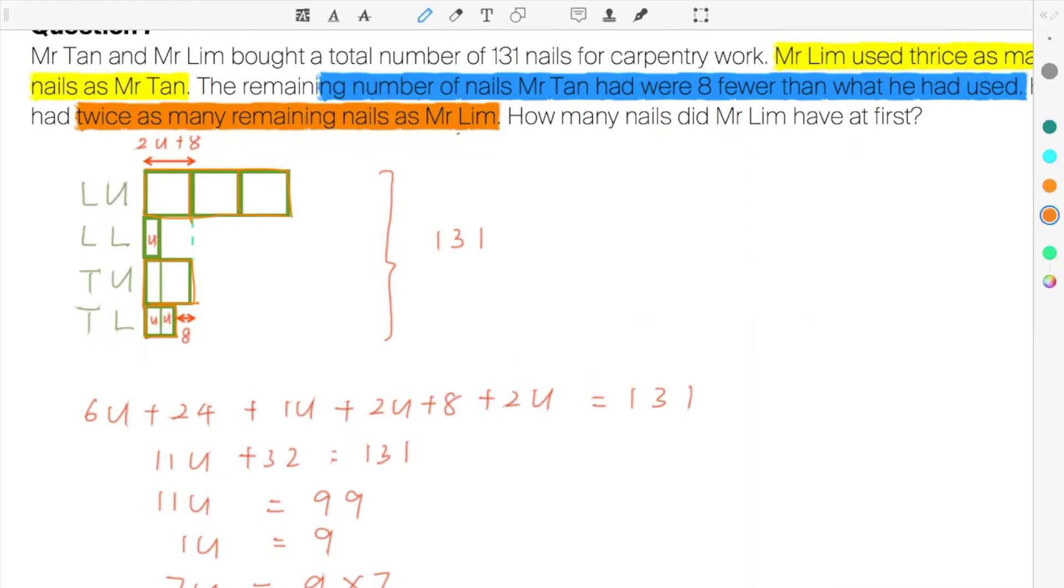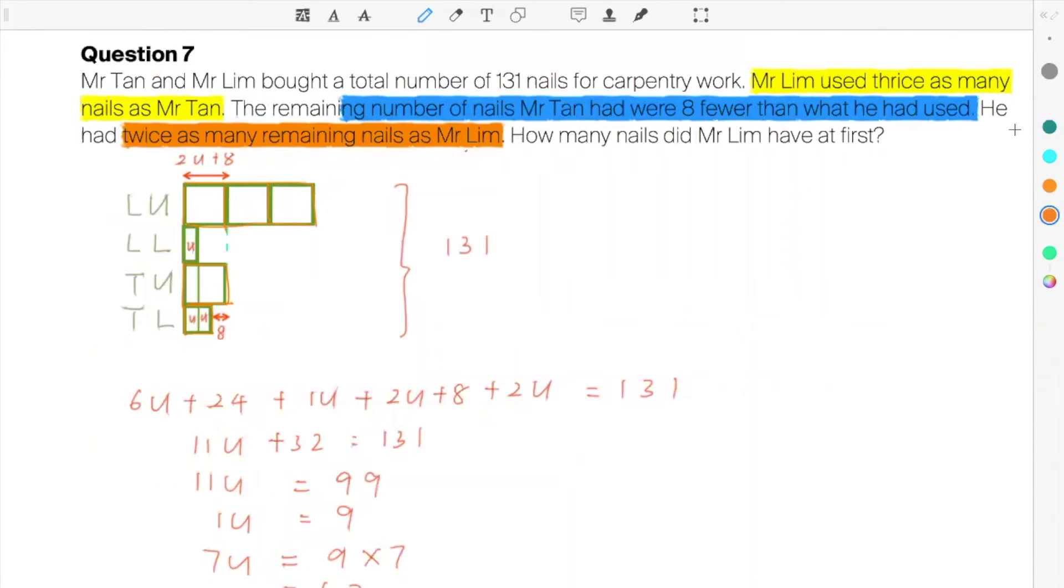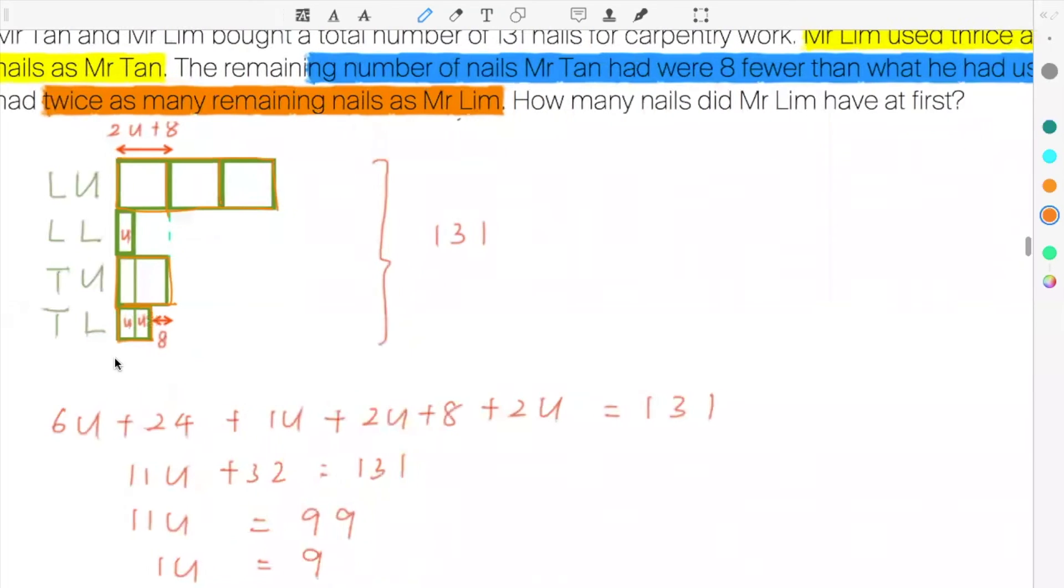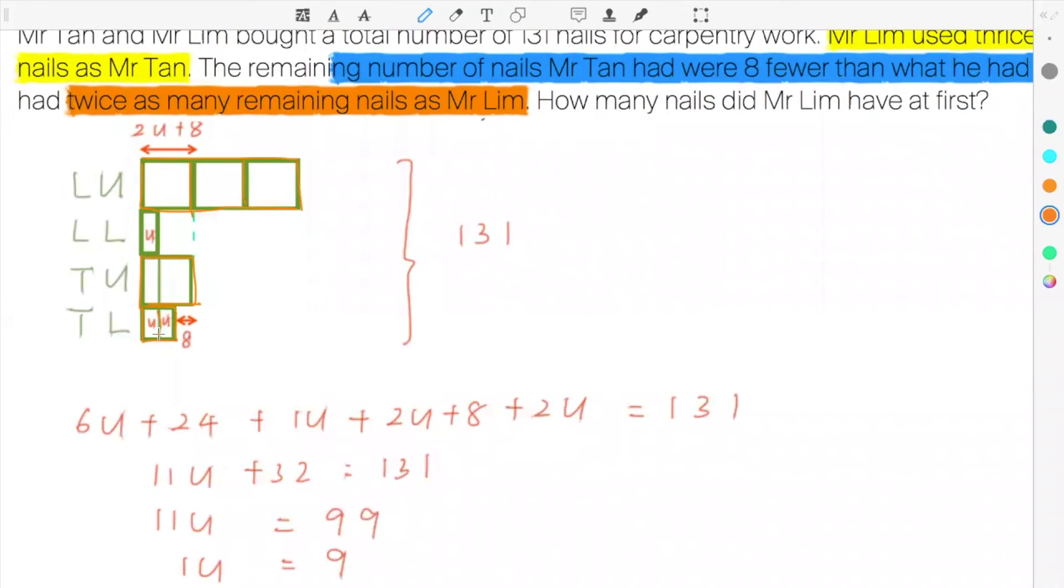Now next, look at that last statement. You are given this. He had twice. So apparently Mr. Tan had double. Had twice as many remaining nails as what Mr. Lim has. So guys, look at this. So this small orange box that we drew just now is actually double. So I'm going to break it into two smaller units. This model that I drew for Mr. Tan is double of what Mr. Lim has.